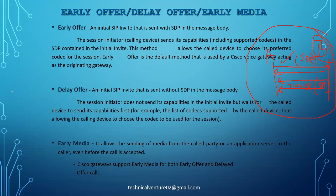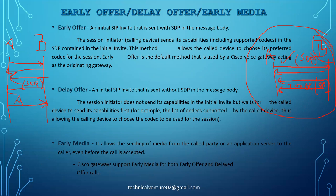In delayed offer, phone A sends the INVITE without SDP — without its media capabilities. Phone B sends 100 Trying, 180 Ringing, and then includes its media capabilities in the 200 OK. Phone A then negotiates and sends the negotiated media capabilities in the ACK. So in early offer, phone B negotiates; in delayed offer, phone A negotiates via the ACK.